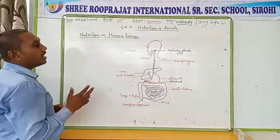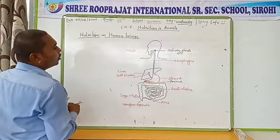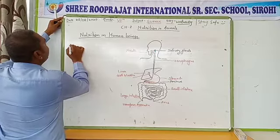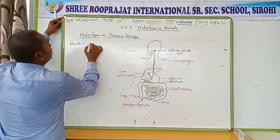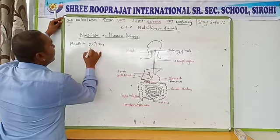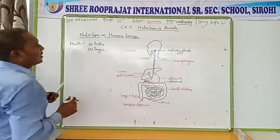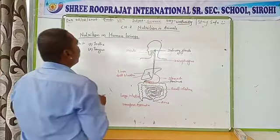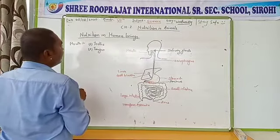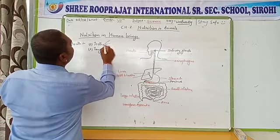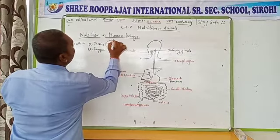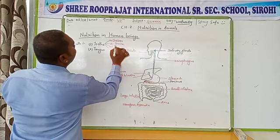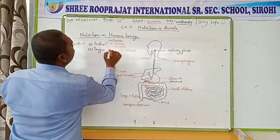As we intake the food in the first step — ingestion — it is taken through our mouth. In our mouth there are two parts present: first, teeth, and second, tongue. Teeth are the bony structures present in our mouth that help in chewing the food or breaking the food into smaller pieces. The teeth can be classified into four categories: incisor, canine, premolar, and molar.